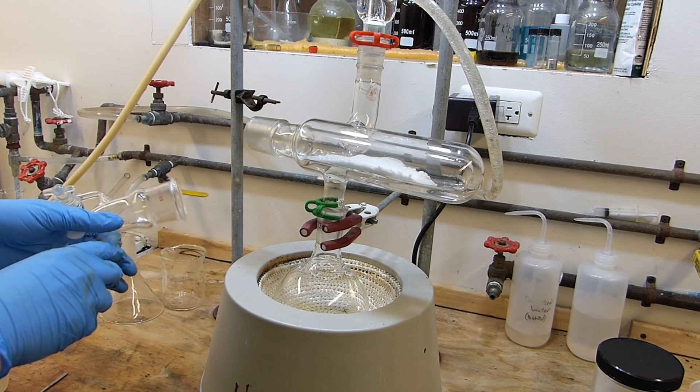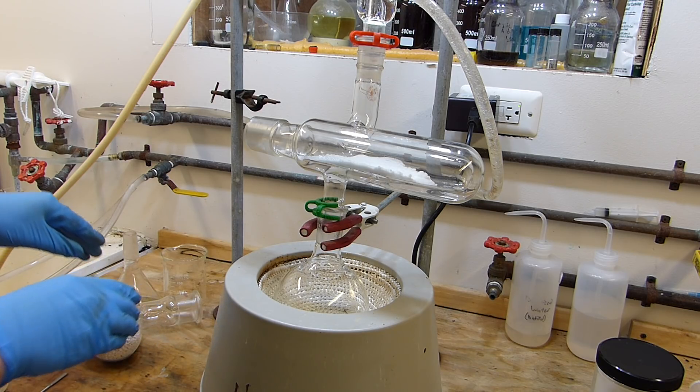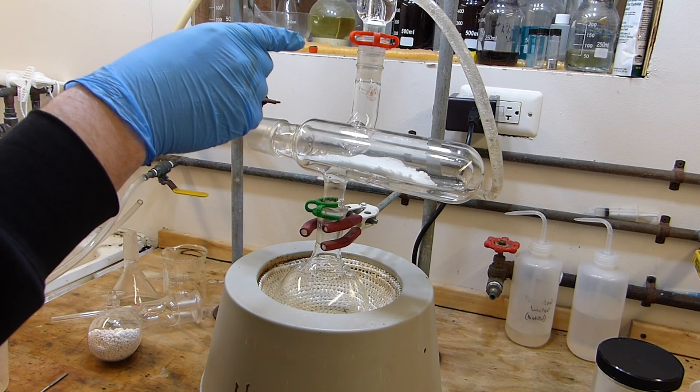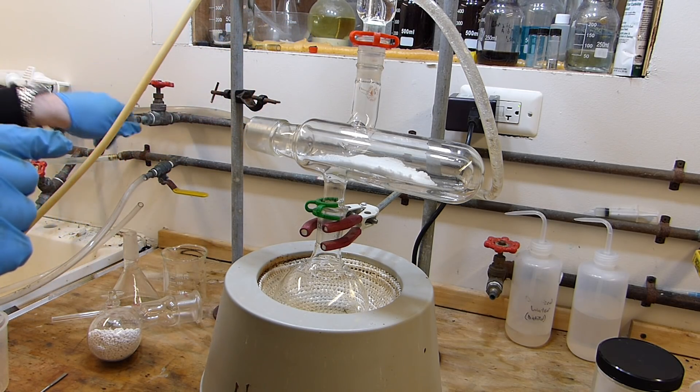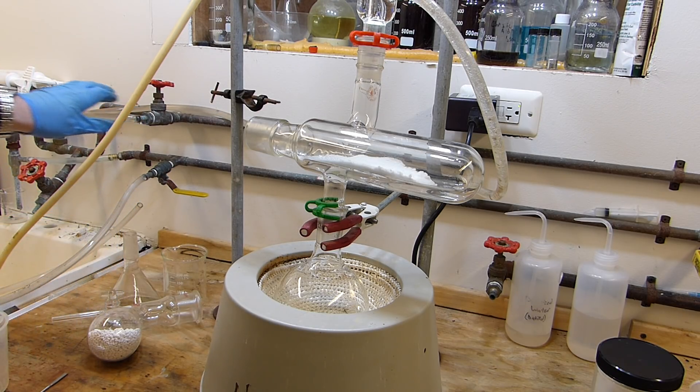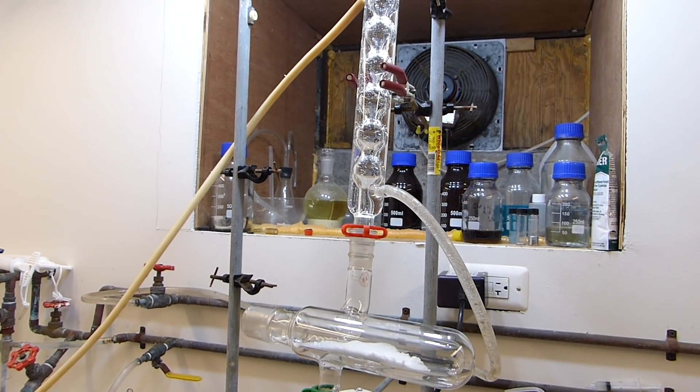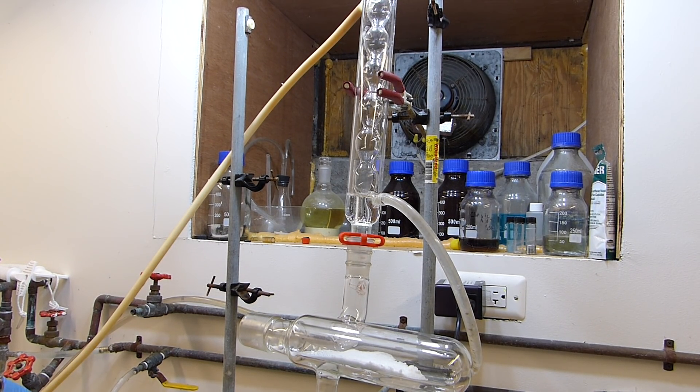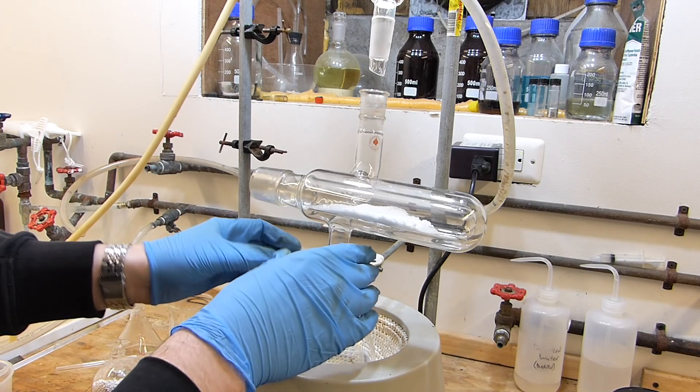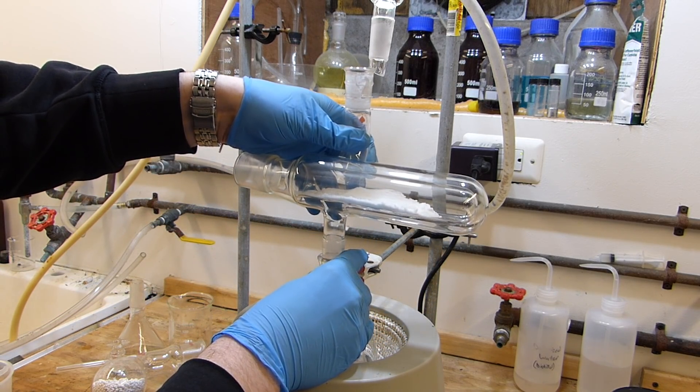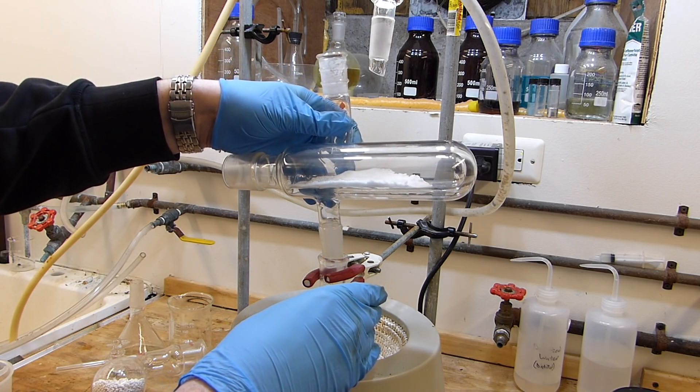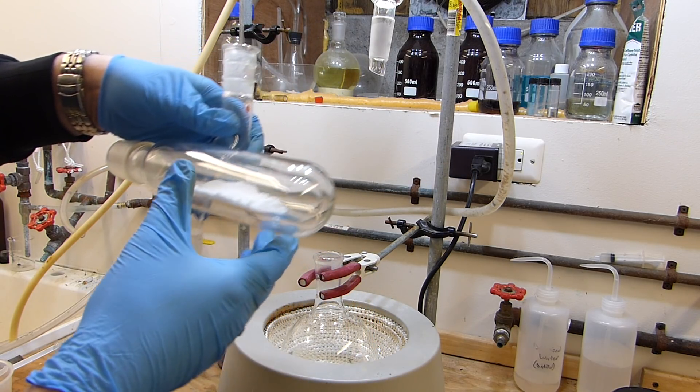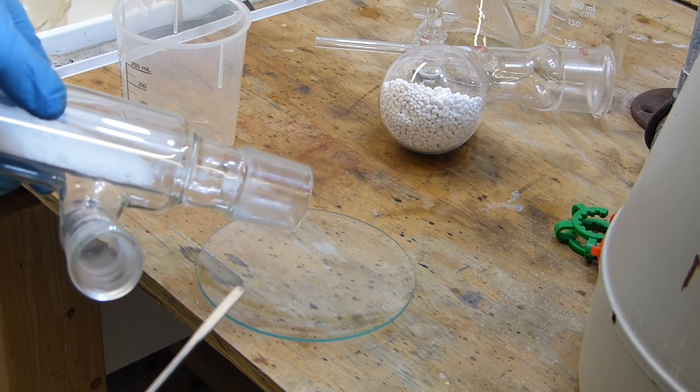I can rotate that off. Now drain the condenser. I'll just turn off the water to it and pull this line off and let it drain into the sink. And this should come off, no problems. A little bit of acetone left in that. We're good.